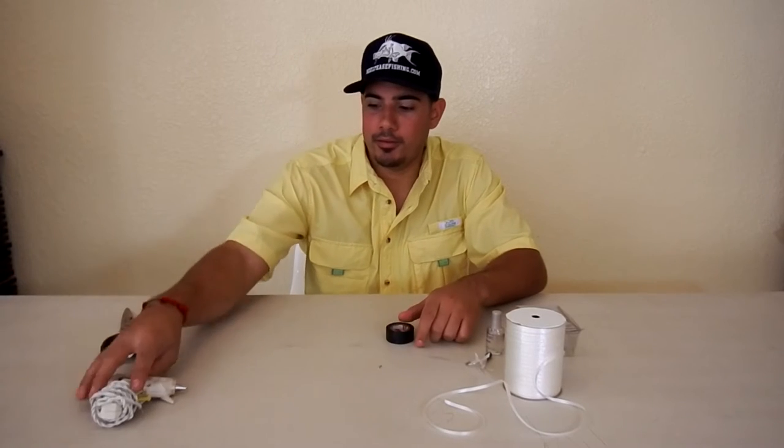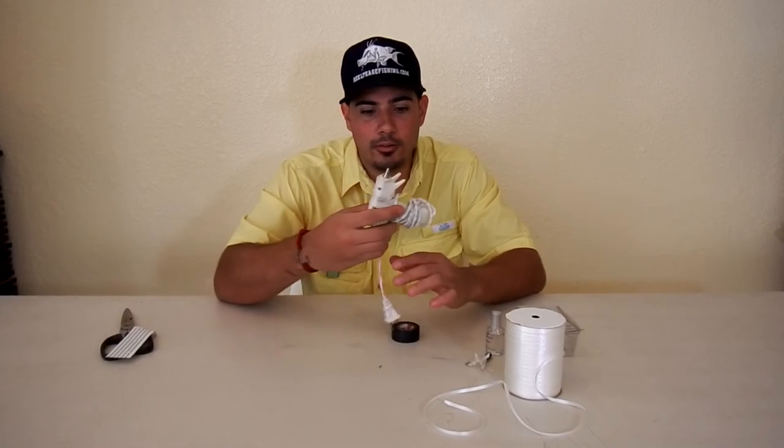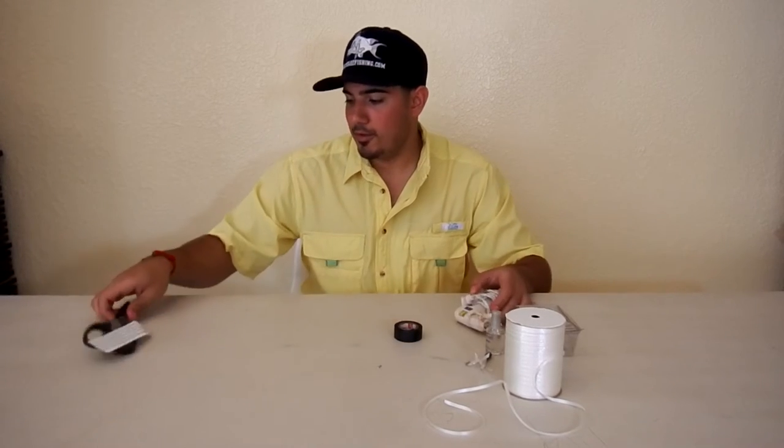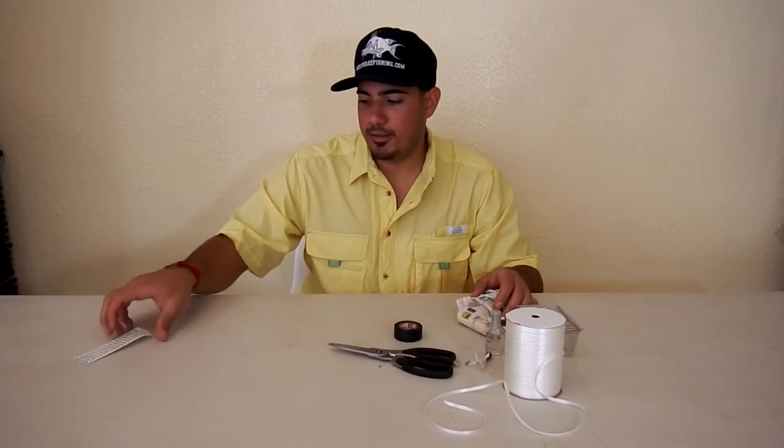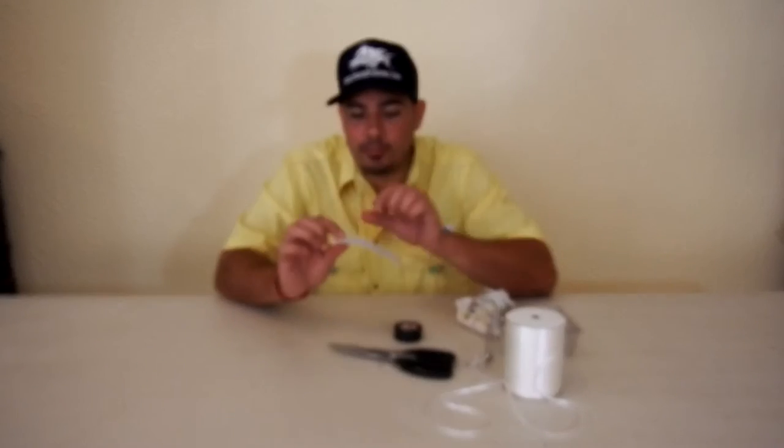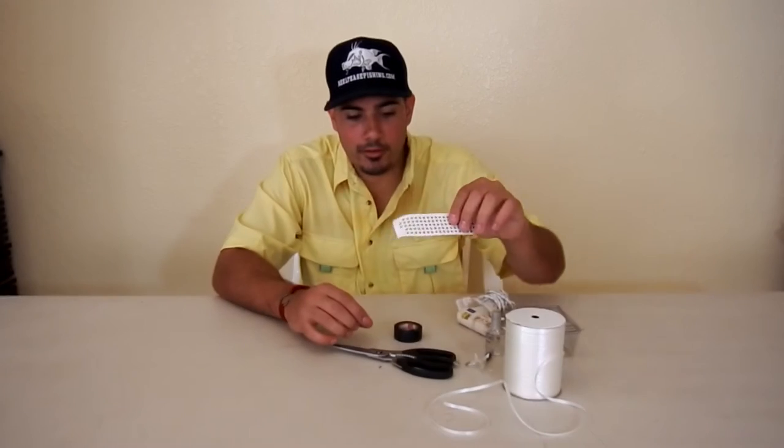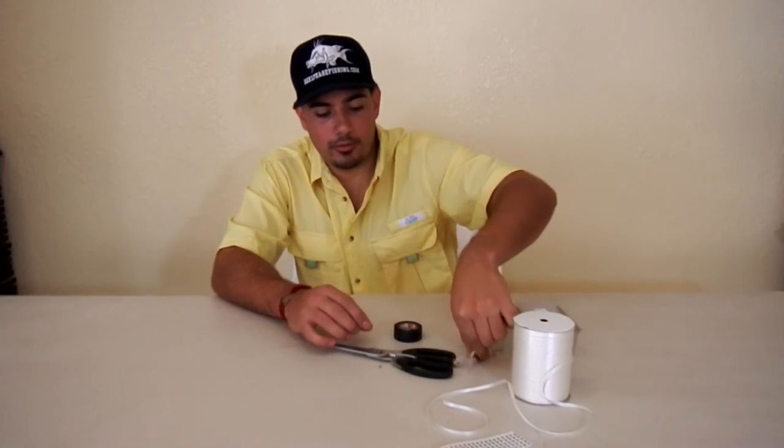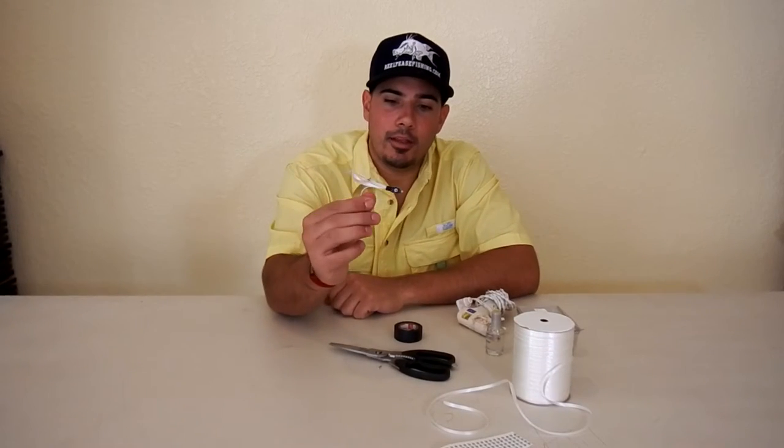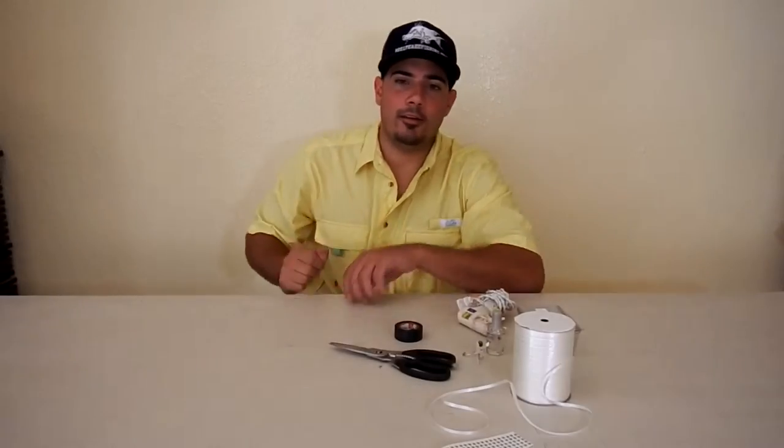Some clear nail polish, some electrical tape, some hot glue gun, a pair of scissors, and if you have it, some little stick-on eyes. The eyes are not necessary but they do make the lure look really nice. So I'm going to teach you how to do that right now.